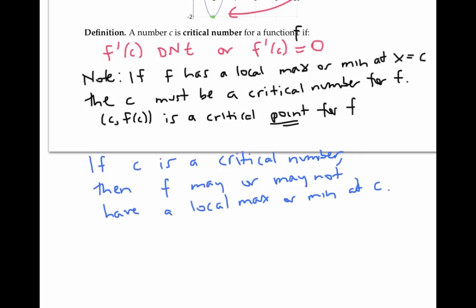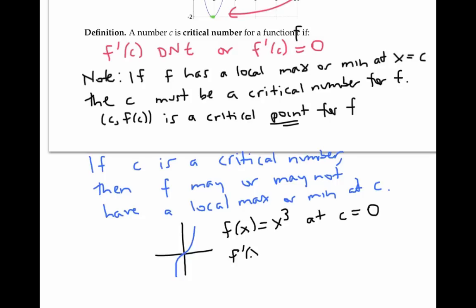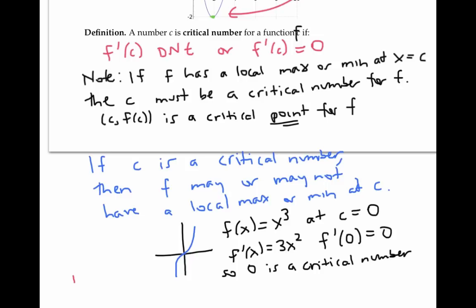One example to keep in mind is the function f of x equals x cubed at c equals zero. Since f prime of x is three x squared, we have f prime of zero equals zero, so zero is a critical number. But notice that f does not have a local max or min at x equals zero.